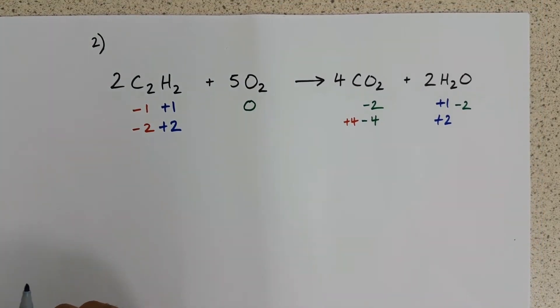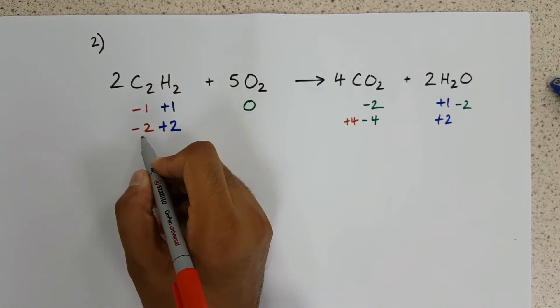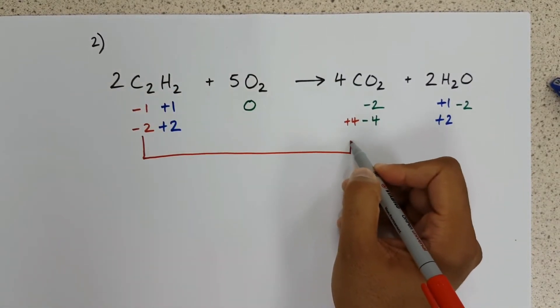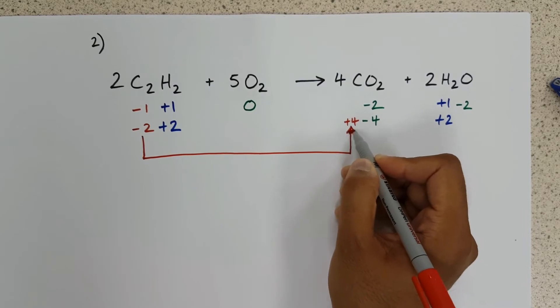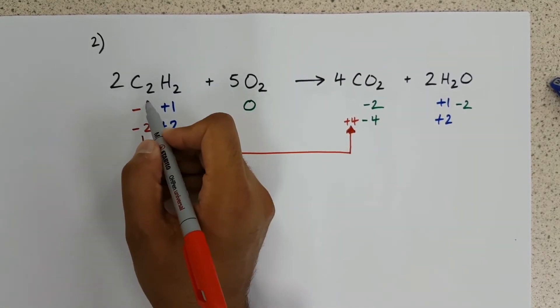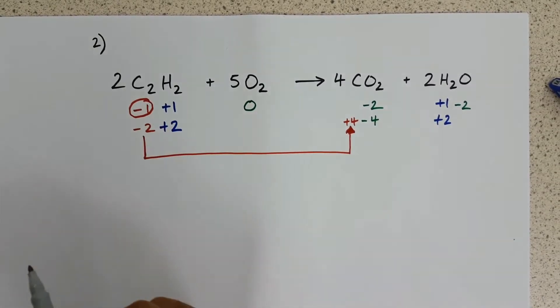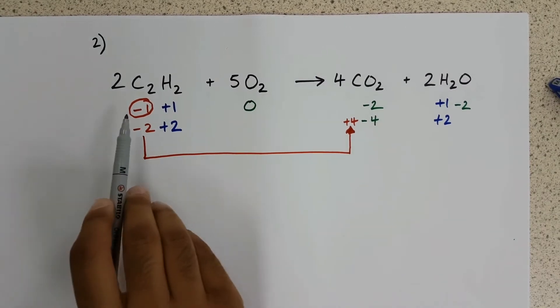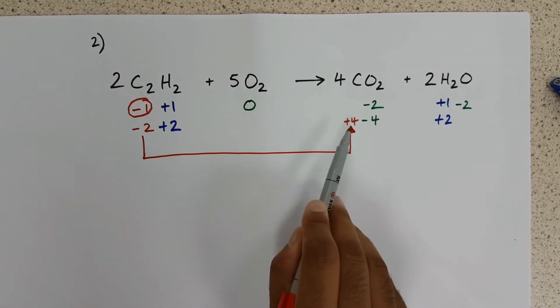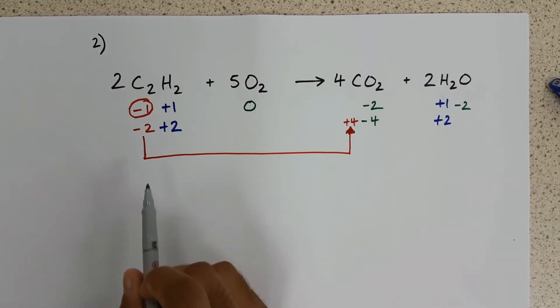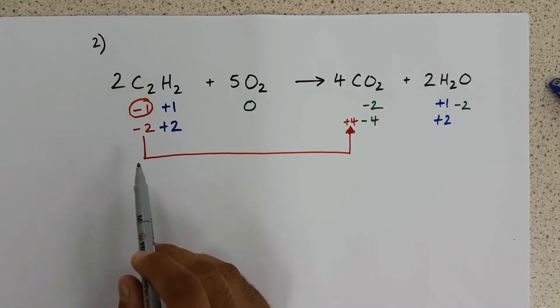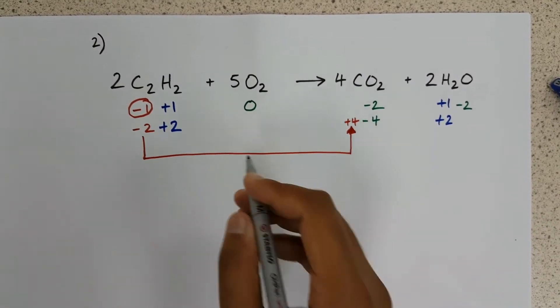We've got our oxidation numbers. Our next step is to work out what has been oxidized and what has been reduced. If we draw our line from carbon to carbon, now we've got to bear in mind we are looking at the oxidation number of one carbon, not two. So minus one to plus four, we have lost electrons. We have become more positive. So if carbon has lost electrons...